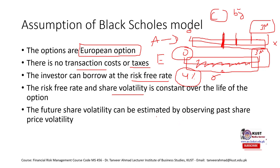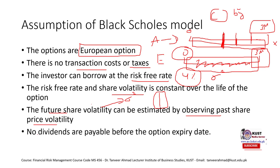The fifth assumption is that future share volatility can be estimated by observing past share volatility. We measure volatility using sigma squared (variance). To calculate it, we take historical price values and compute their variance — for example, using a spreadsheet like Excel to calculate the variance of historical prices. This assumption implies that whatever the volatility was in the past, it will remain constant going forward.